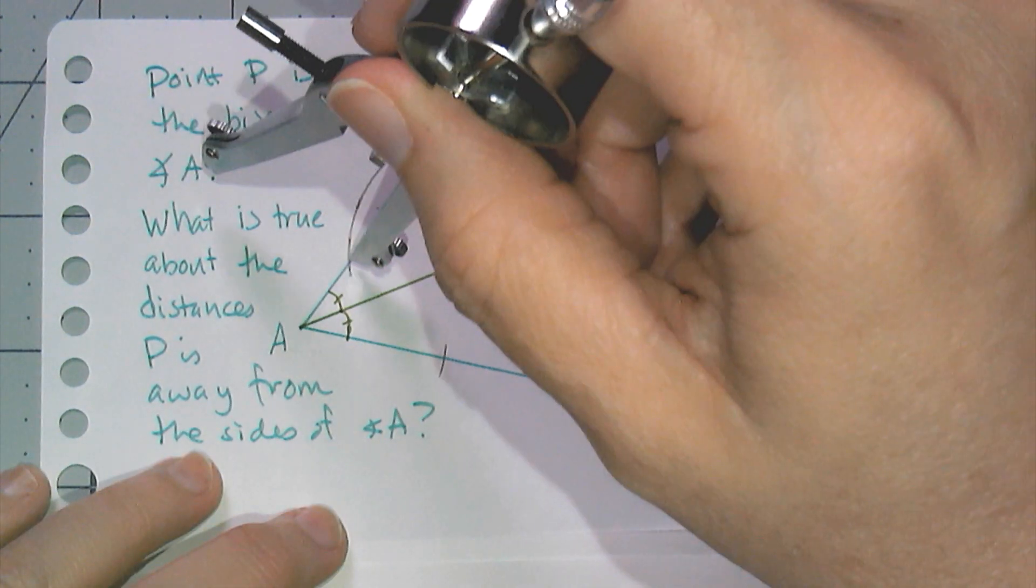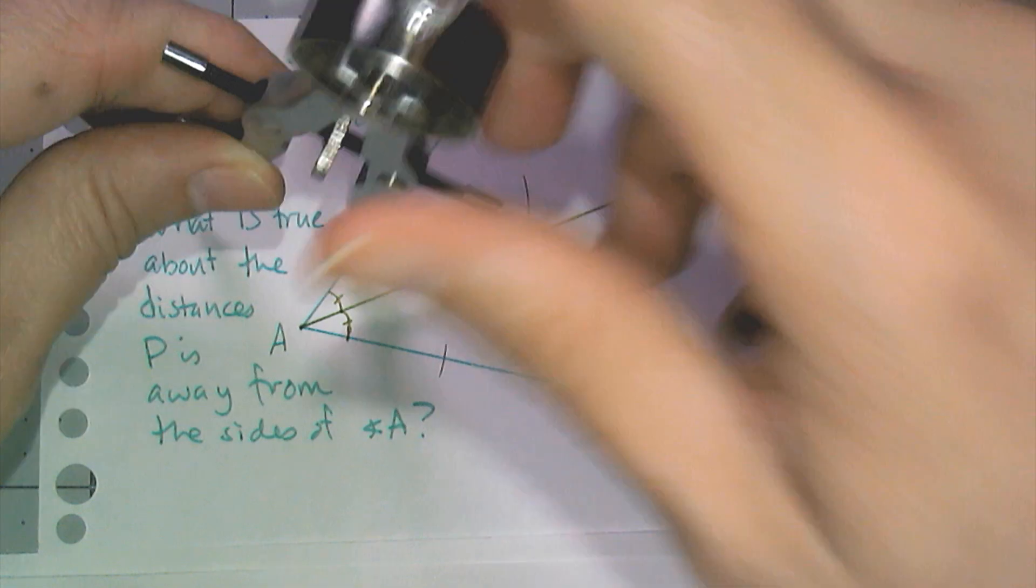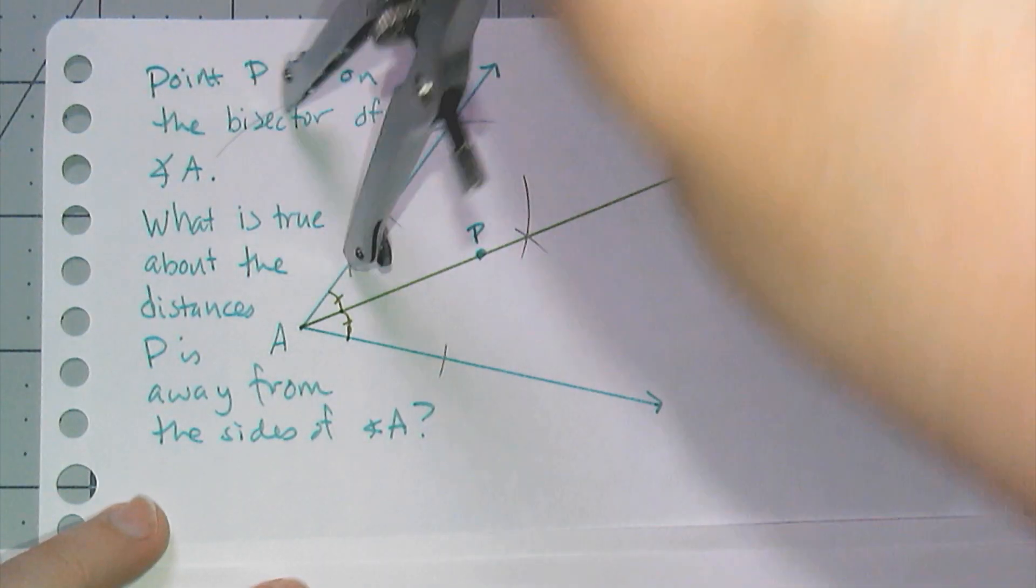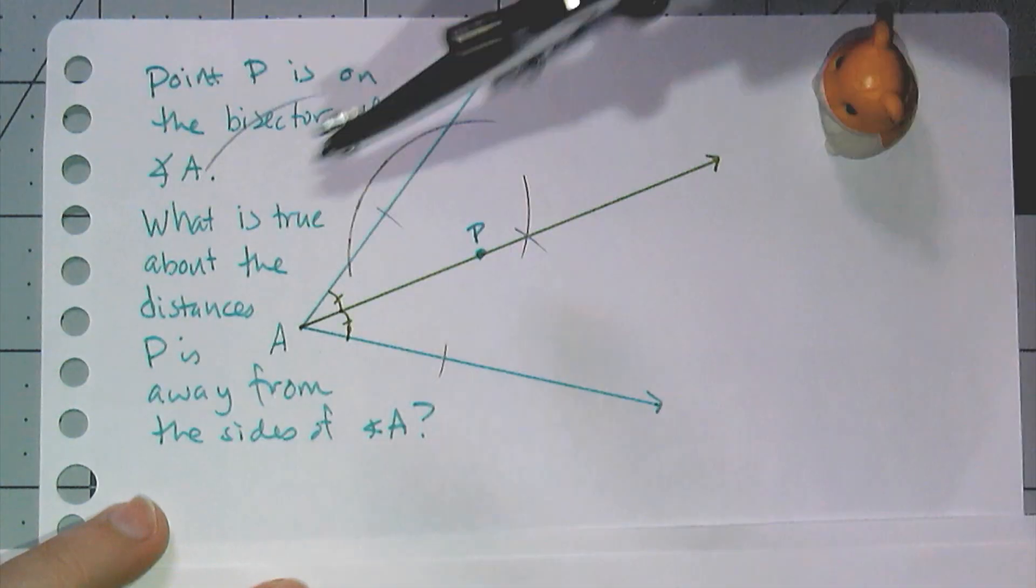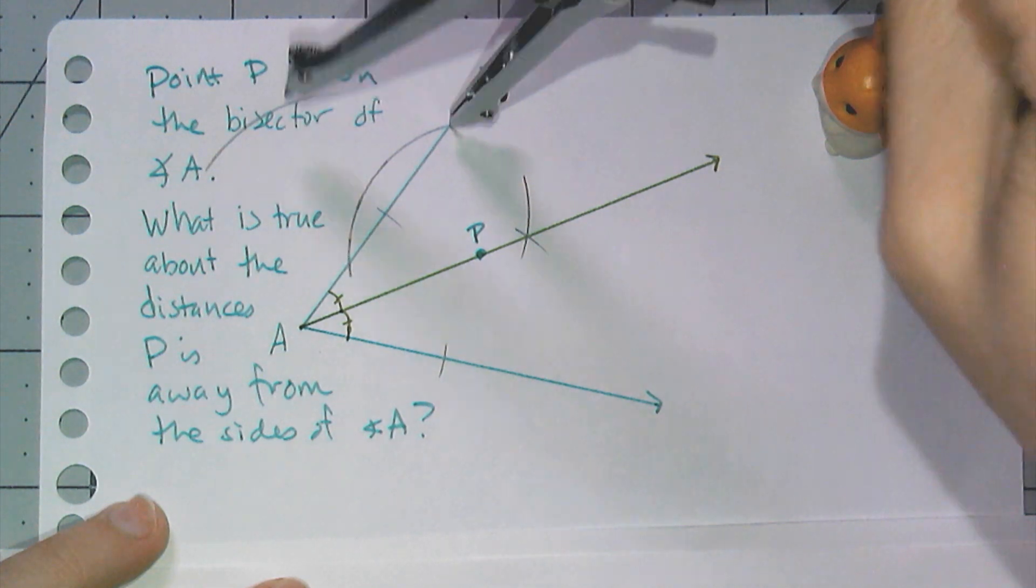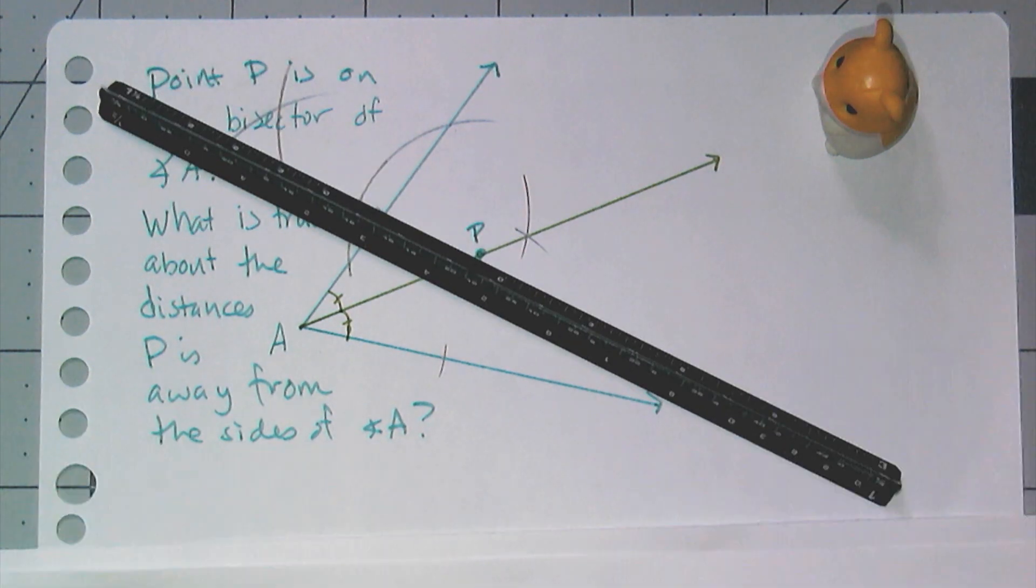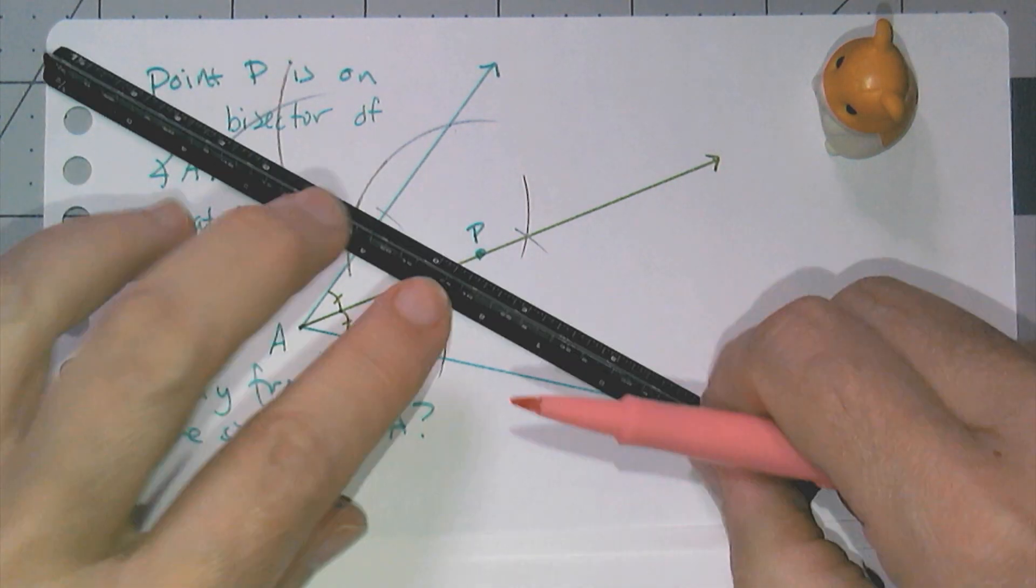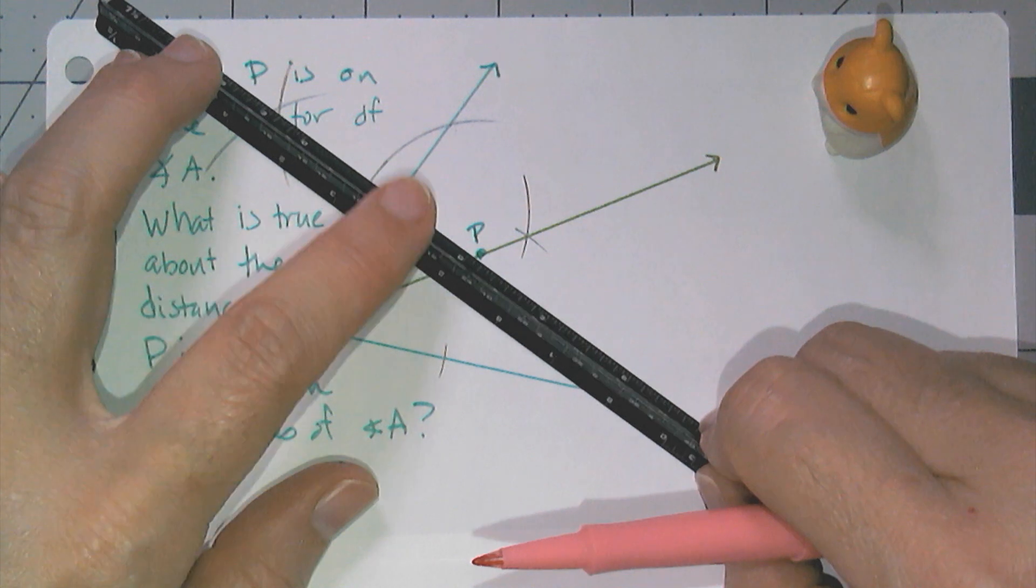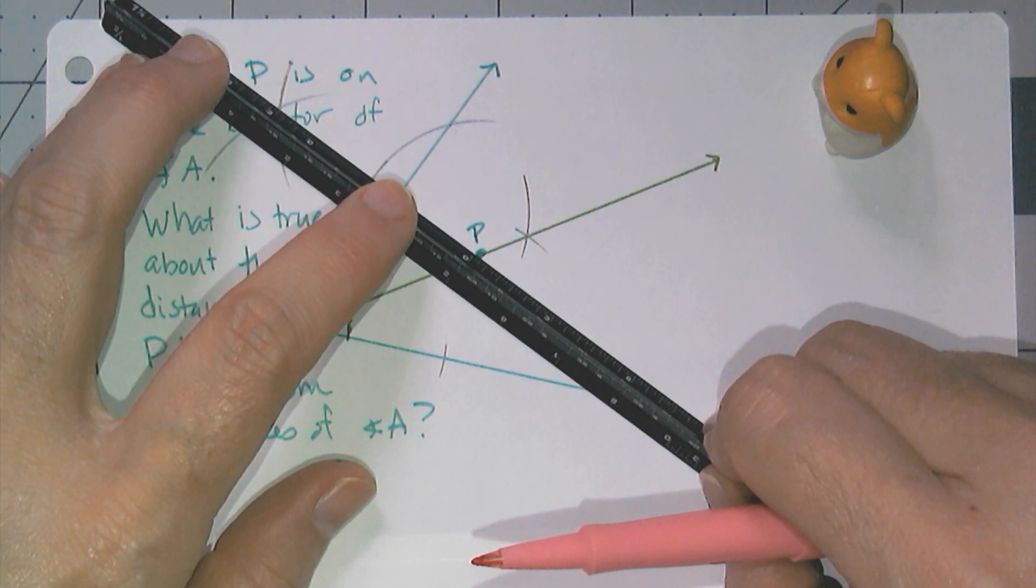Hopefully it'll fit on the paper. So I strike an arc there, and I'm going to put my other arc there, and I am interested in connecting point P with that intersection, and that gives me a right angle.